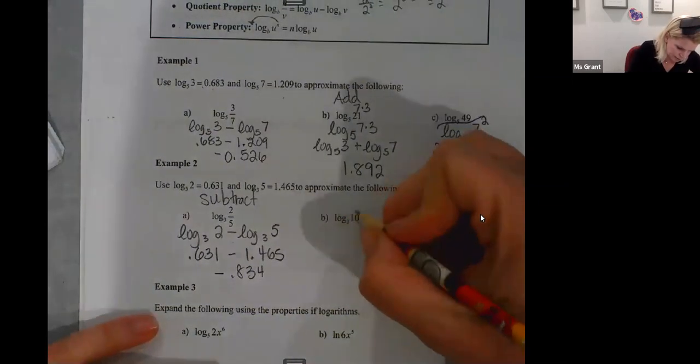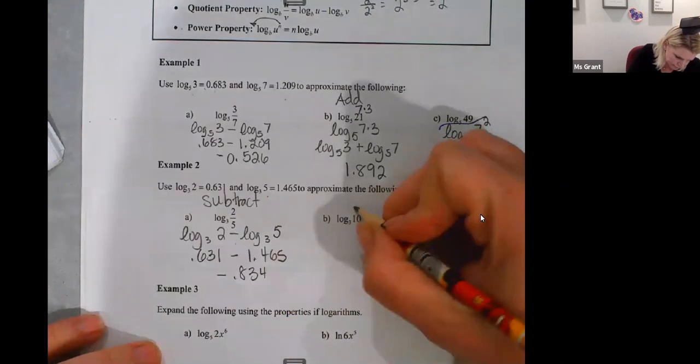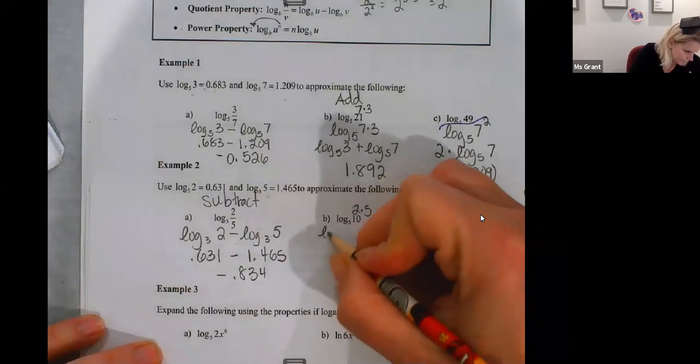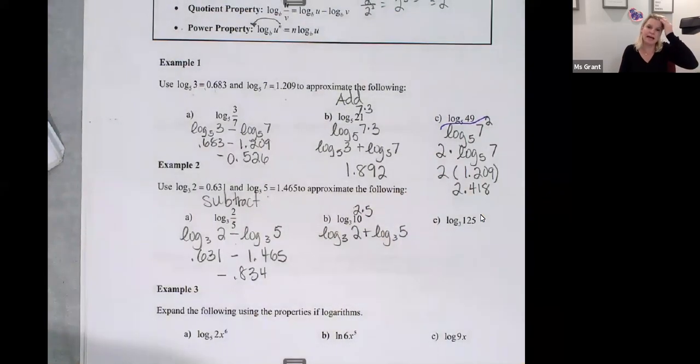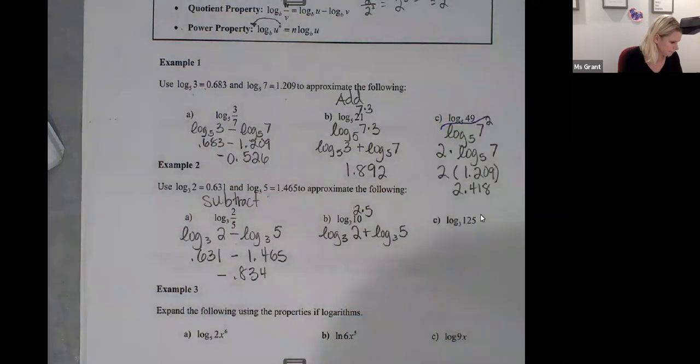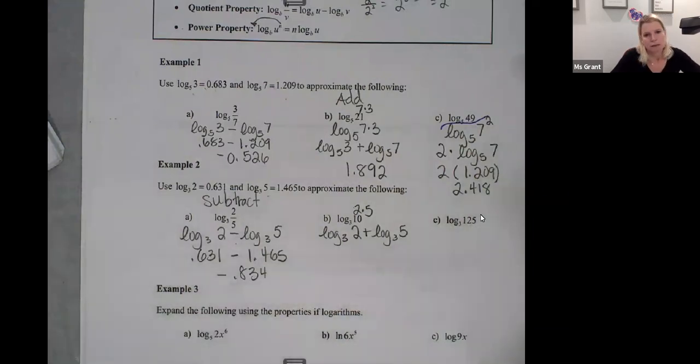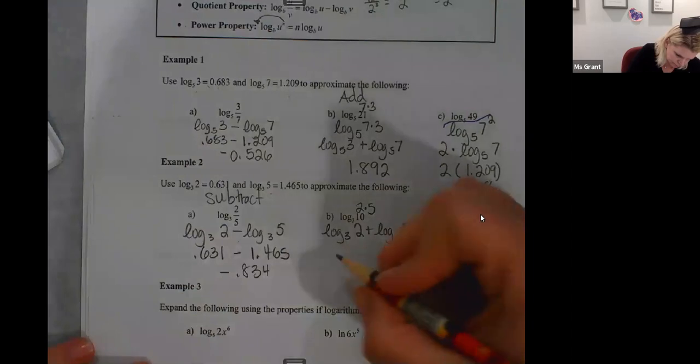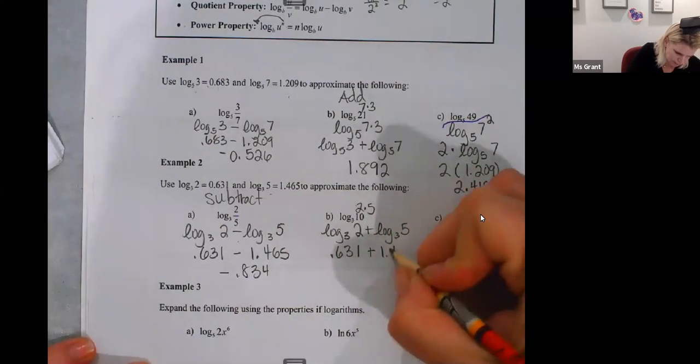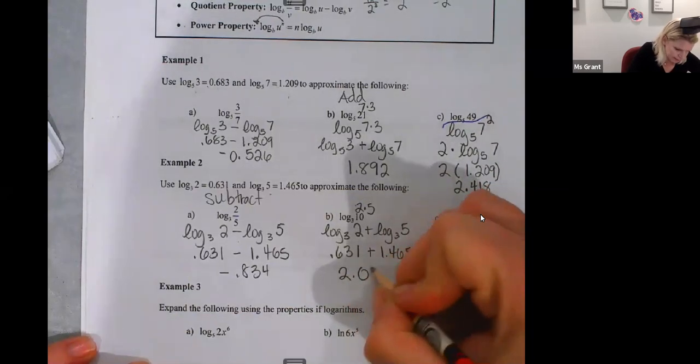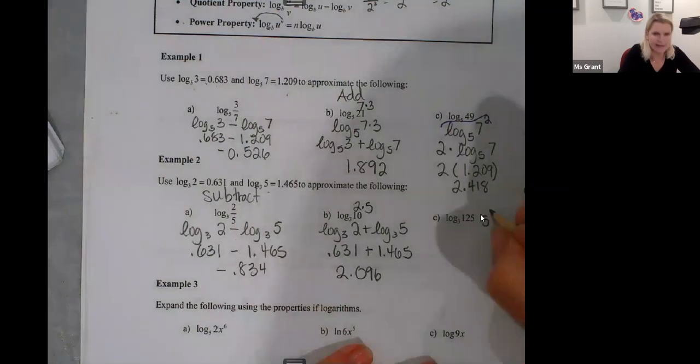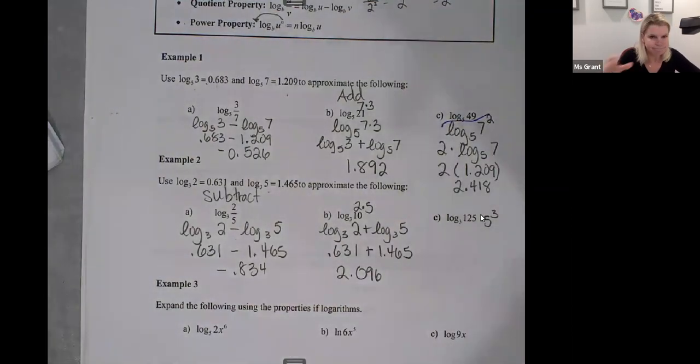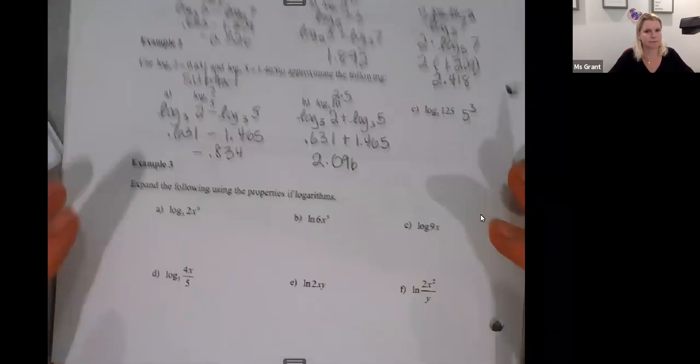B, log base 10. I can make, look it, I've got a two and a five. I can make it two times five. Log base three of two plus log base three of five. Remember, multiplying is adding. So I just rewrite 0.631 plus 1.465, 2.096. And 125 is going to be five to the third, but I need to move on to our next note stuff. So I'm just going to go to example three, just for time purposes.